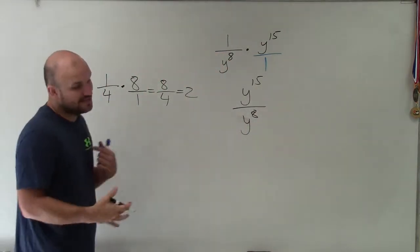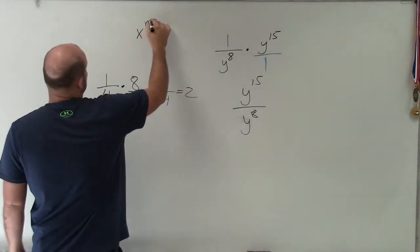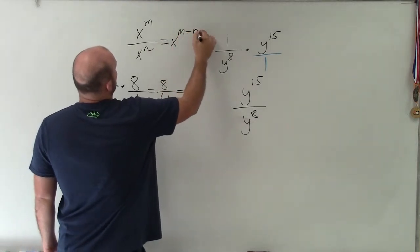Now when I go ahead and simplify this, we need to use our rules of exponents. And our rules of exponents state, if I have x to the m divided by x to the n, that equals x to the m minus n.